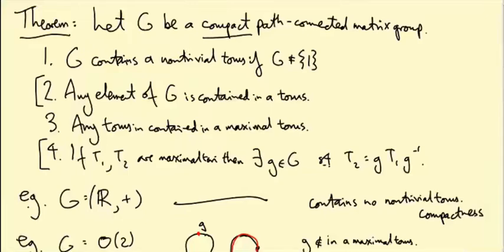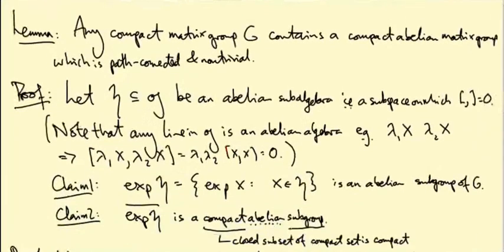We're now working towards a proof of the theorem that a compact matrix group contains a non-trivial maximal torus. What we've proved so far is that a compact matrix group contains a compact abelian matrix group which is non-trivial, and we can assume it's path connected by just taking its identity component. So what we're going to do is prove this abelian group we've constructed is actually a torus.